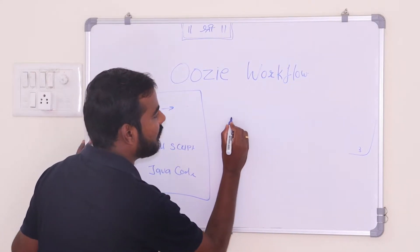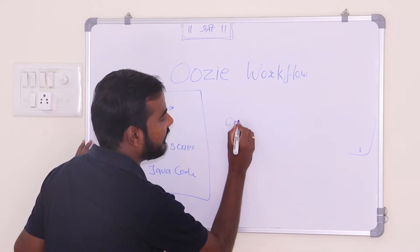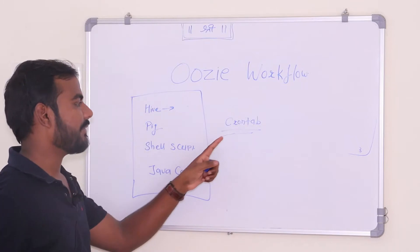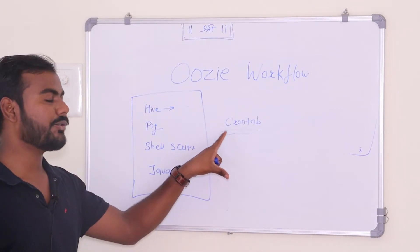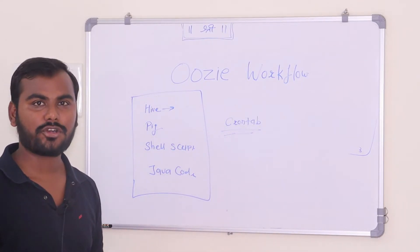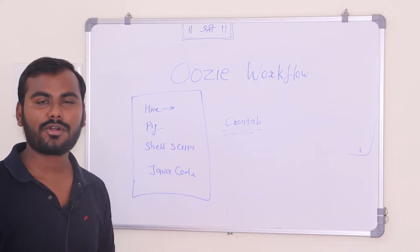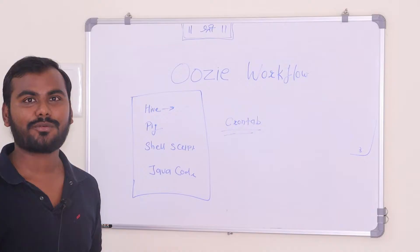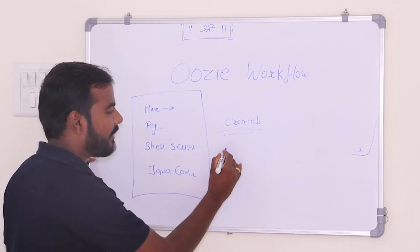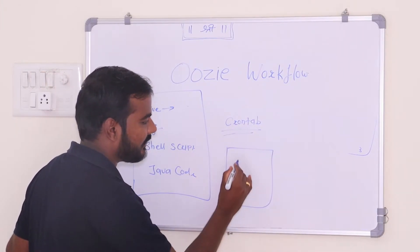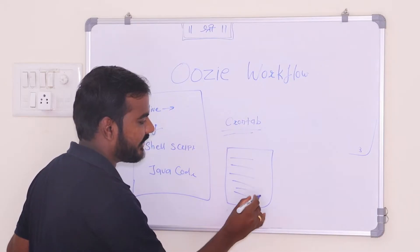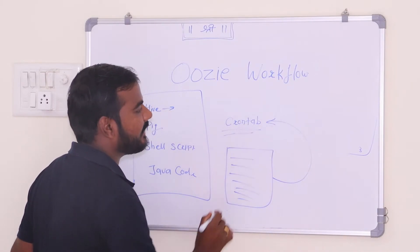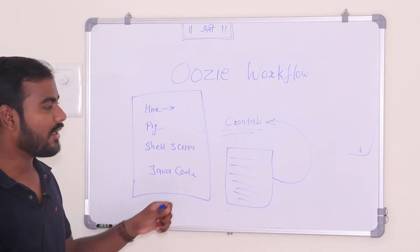We need to configure and write the actions in such a way that the output of one action becomes the input for another action. You may have heard about something called crontab, which is a basic thing available on every Unix platform. Crontab is a scheduler which will schedule your job, because at night if you want to start any job you cannot go manually and start it. Normally we write our shell scripts and configure them in crontab.